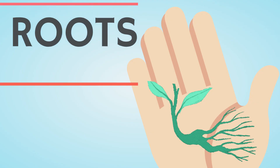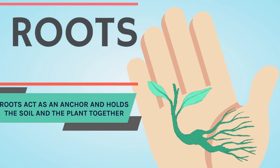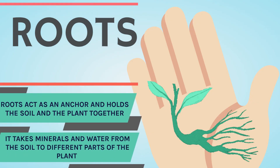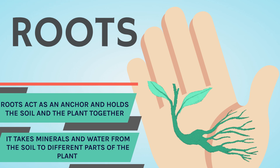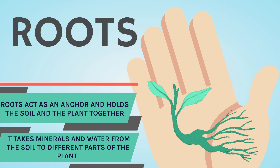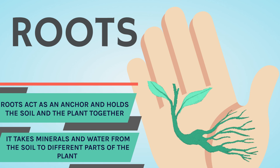These are roots. Roots anchor the plant to the soil. It takes minerals and water from the soil to different parts of the plant like the leaves, stems, flowers, fruits, etc.